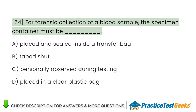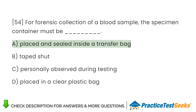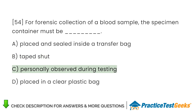For forensic collection of a blood sample, the specimen container must be A. Placed and sealed inside a transfer bag. B. Taped shut. C. Personally observed during testing. D. Placed in a clear plastic bag.